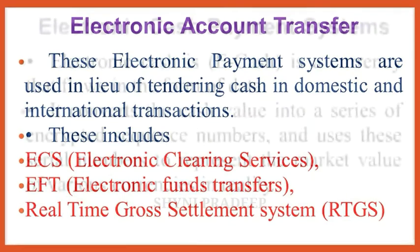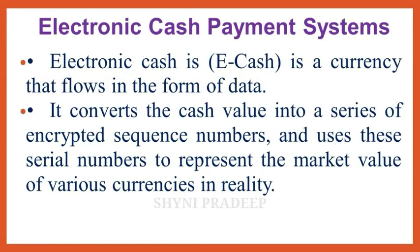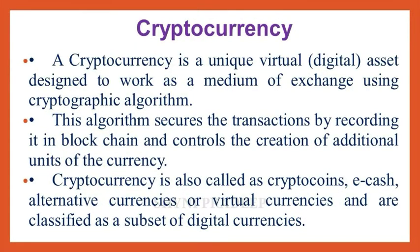Electronic cash is a currency that flows in the form of data. It converts cash value into a series of encrypted sequences of numbers using serial numbers to represent the market value of various currencies. A cryptocurrency is a unique virtual asset designed to work as a medium of exchange using a cryptographic algorithm, which secures transactions by recording them in a blockchain and controls the creation of additional currency units. Cryptocurrency is also called crypto coins, e-cash, alternative currencies, or virtual currencies.